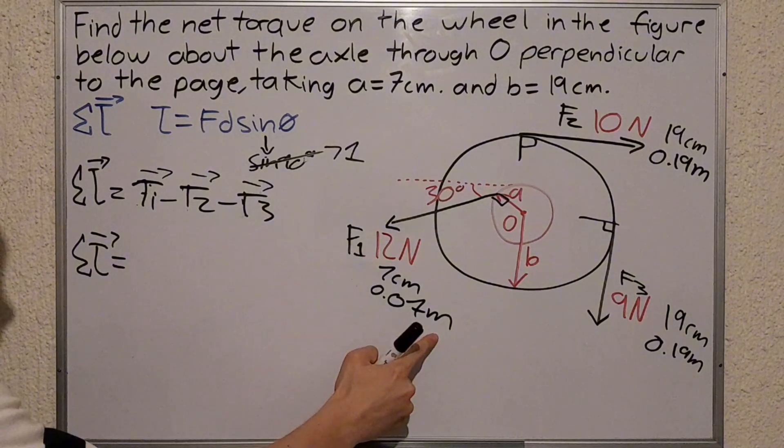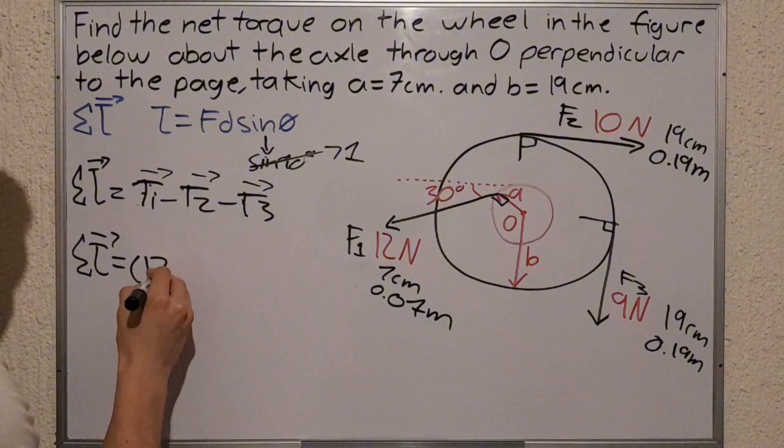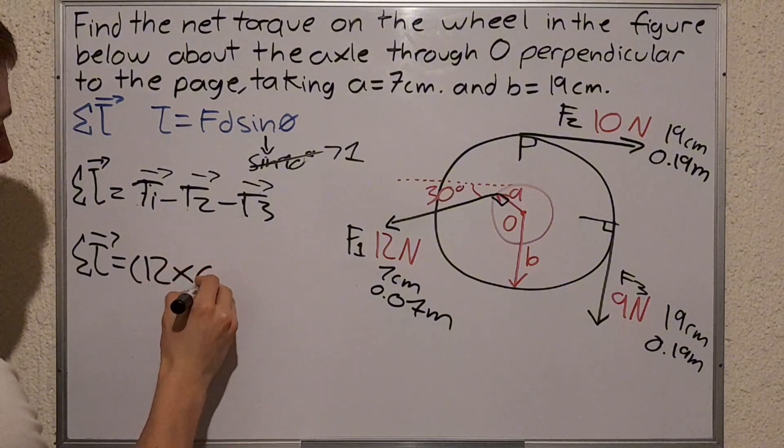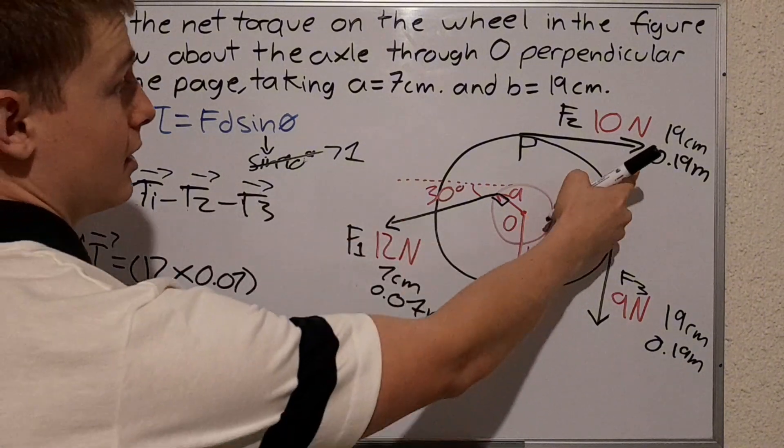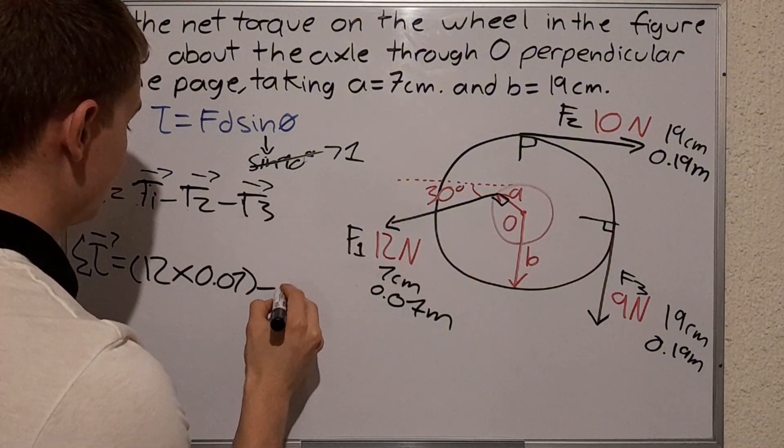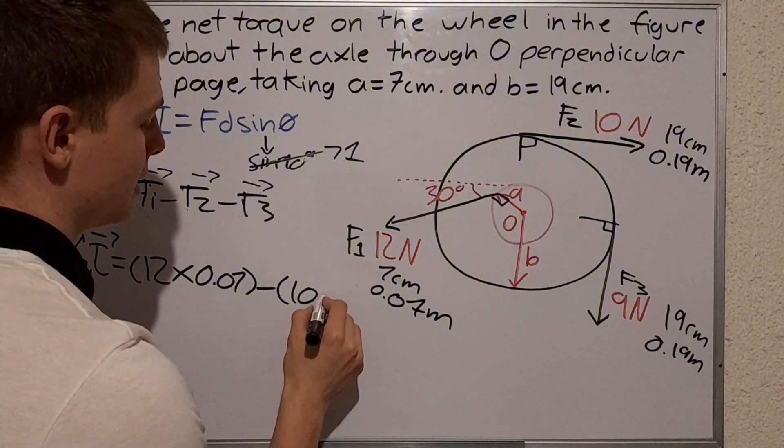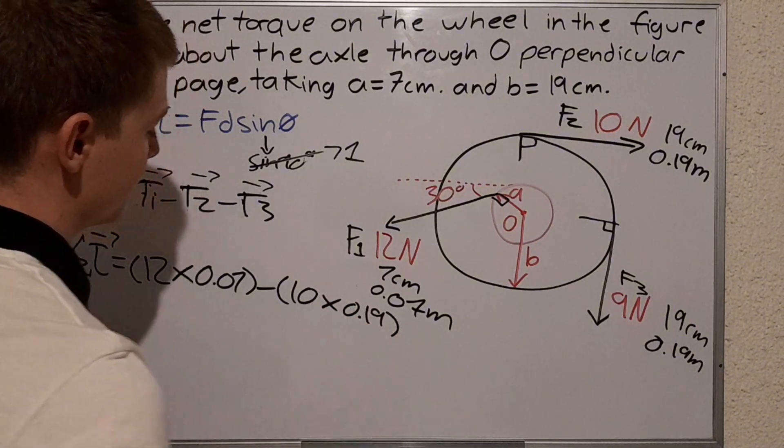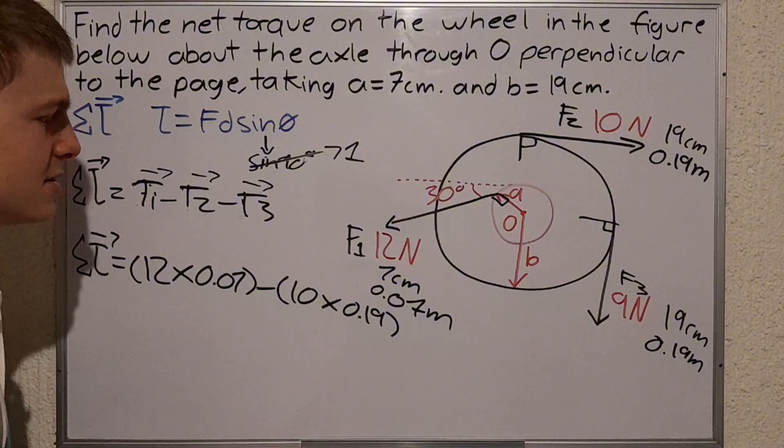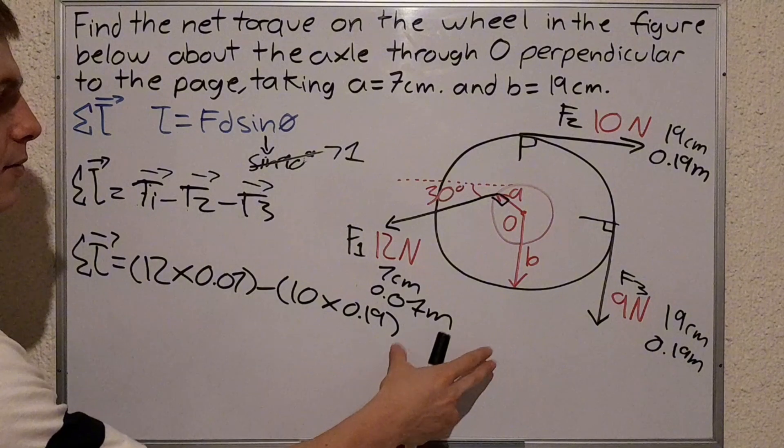T2 right here: minus 10 newtons of force times 0.19 meters. I'm gonna skip the units so I won't write much on the whiteboard, so don't worry. Torque is gonna be newton meters.